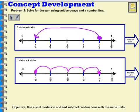So in the first example, 5 sixths minus 4 sixths equaled 1 sixth. In the second example, 1 sixth plus 4 sixths equals 5 sixths.